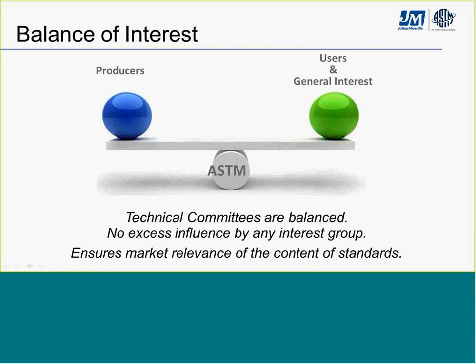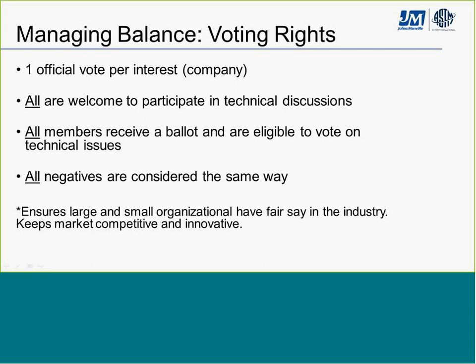ASTM regulations require that all classified technical committees are balanced. A committee cannot have more producers or single manufacturers with initial voting rights than non-producers — which would bar other classifications of user, general interest, and consumer. This makes sure that manufacturers do not dominate the standards development process and that the standards have market relevance and can be utilized by all of the industry.